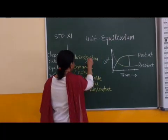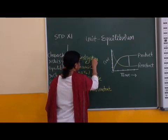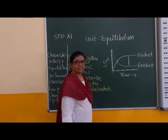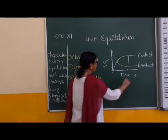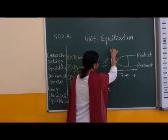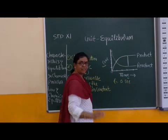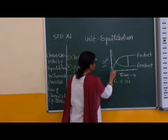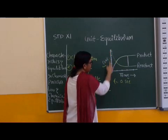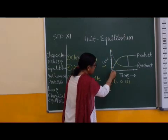This is the nature of the graph: concentration of reactant and product versus time. The nature is just opposite. This curve shows when T is equal to 0 seconds, concentration of reactant is maximum. And product concentration is 0.